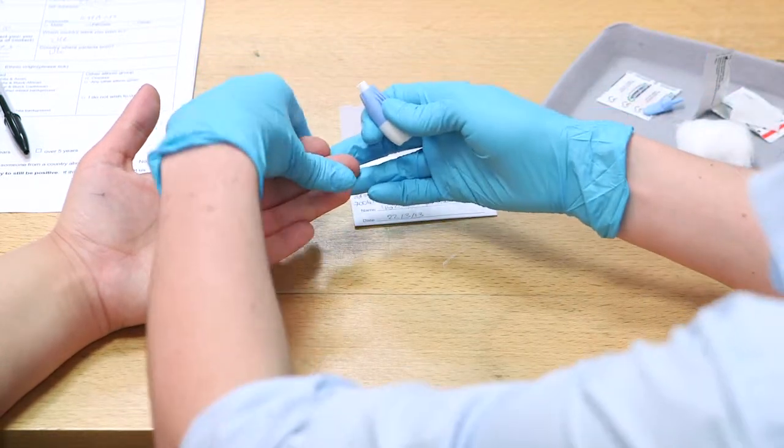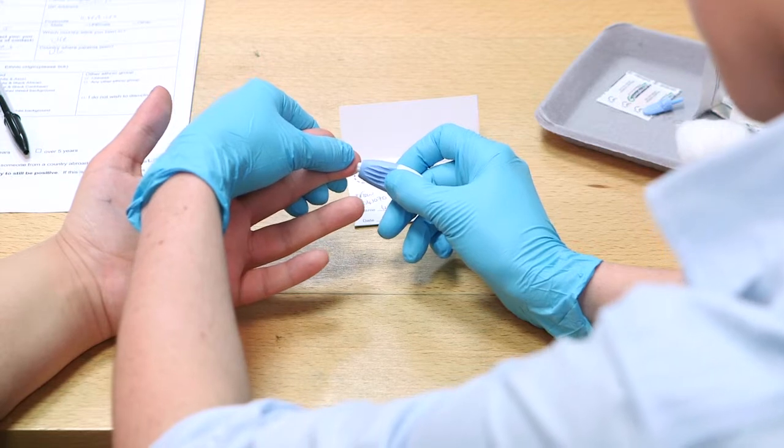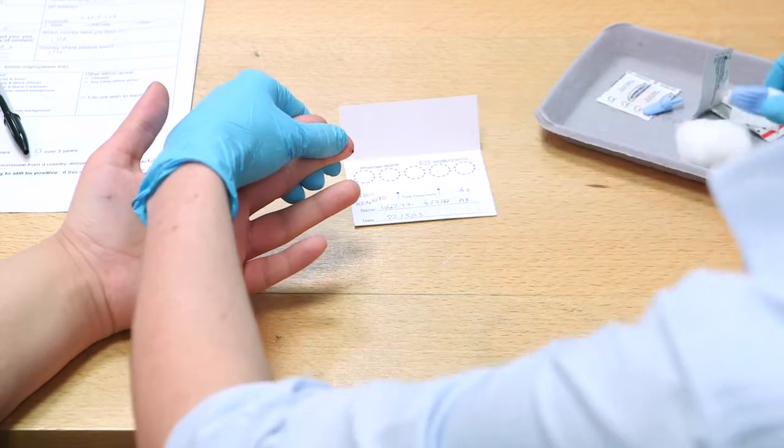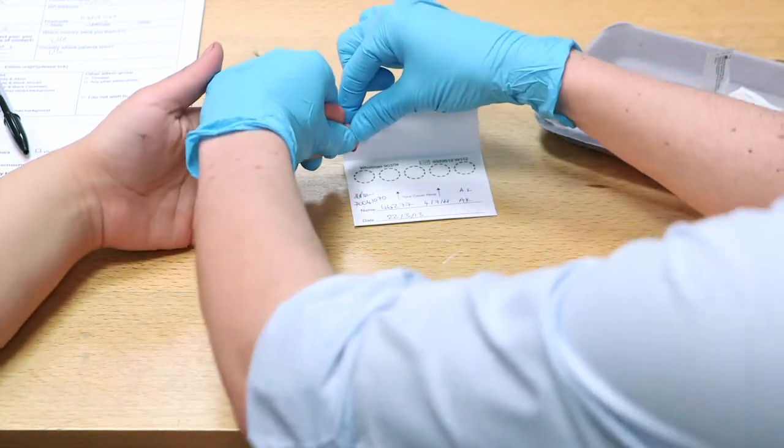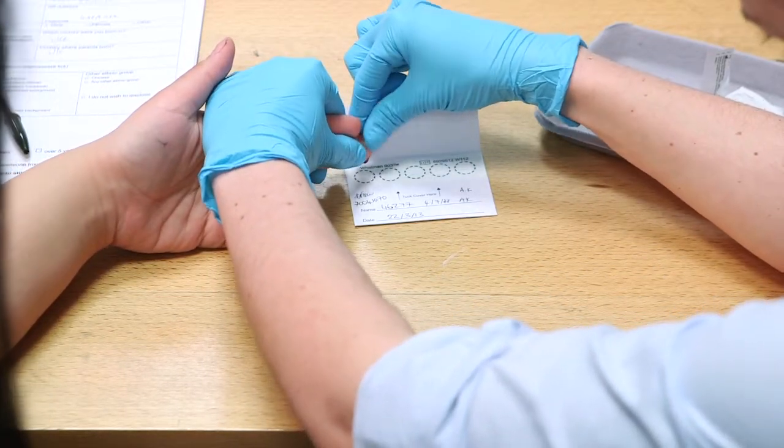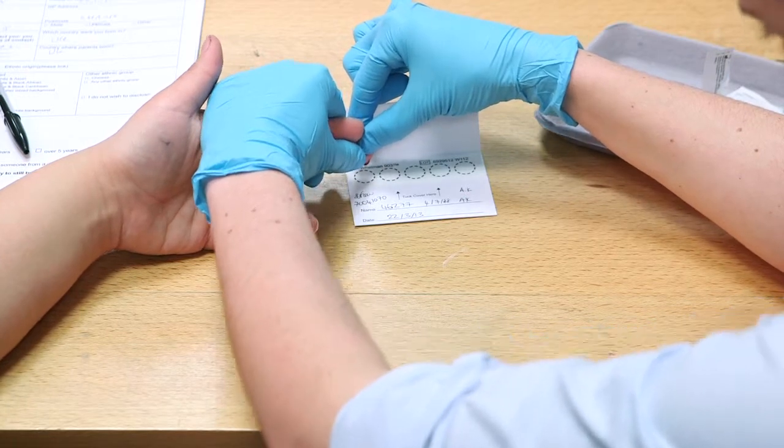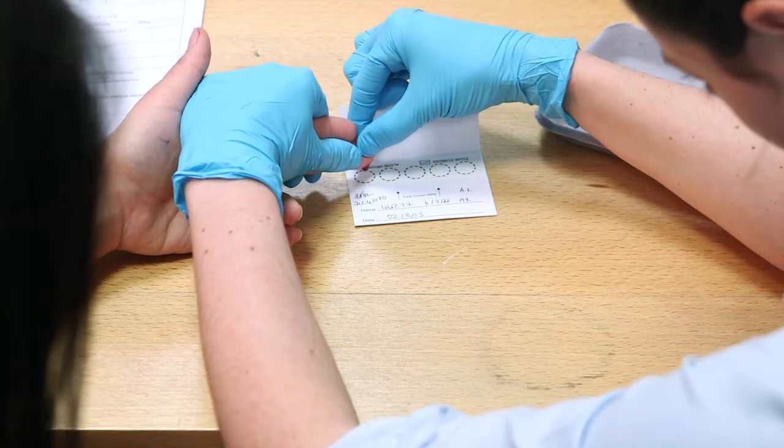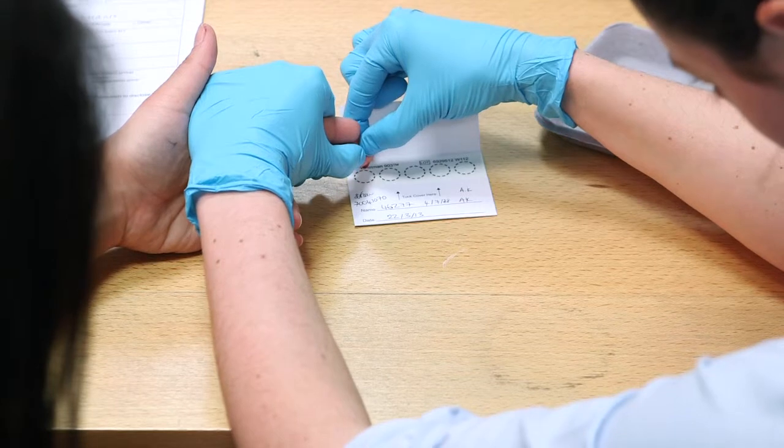Then, apply pressure to the end of the fingertip. Use the lancet in an off-center position, and press down firmly. At this point, you should see a drop of blood.